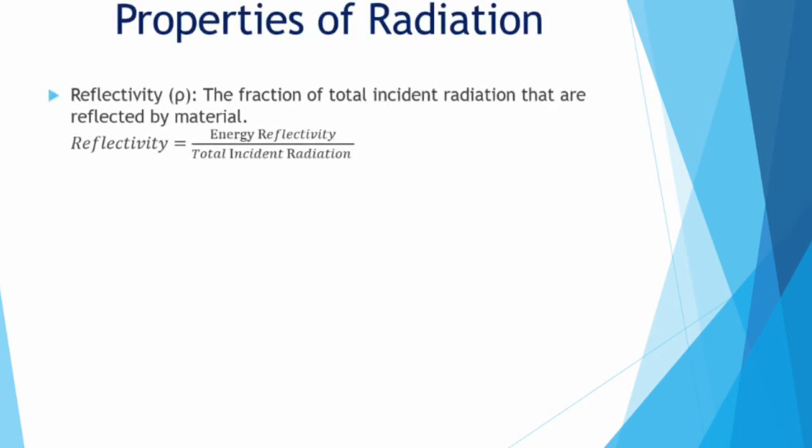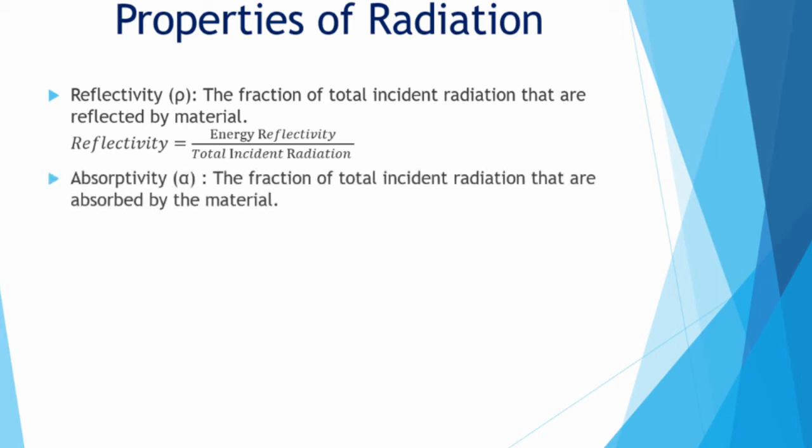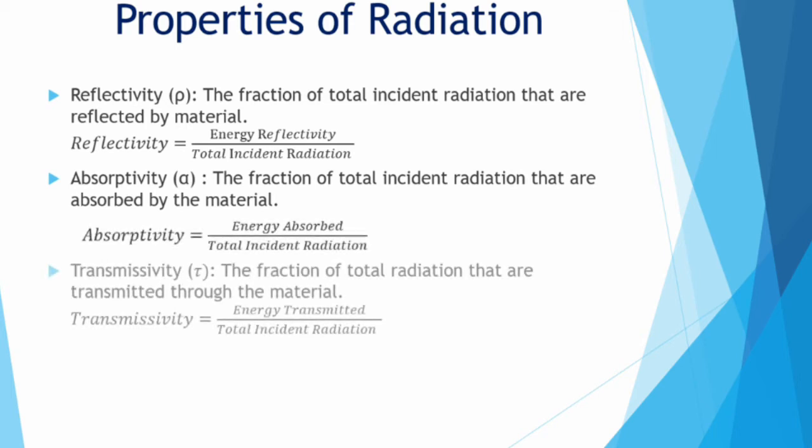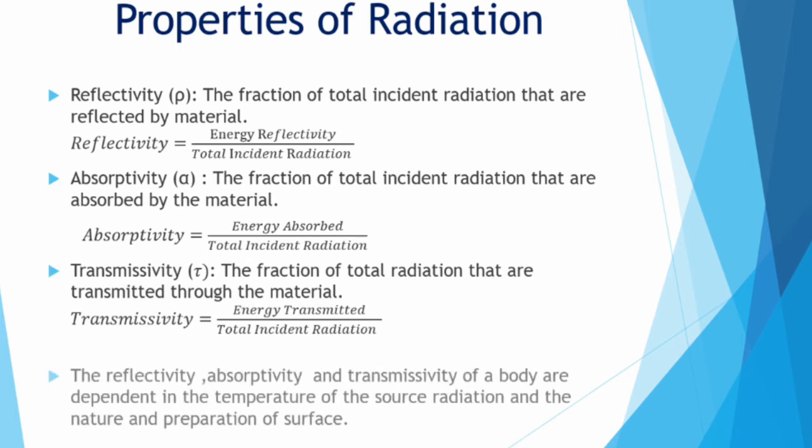Properties of radiation: reflectivity, absorptivity, transmittivity. These three properties are dependent on the temperature of the source radiation and the nature of preparation of surface.